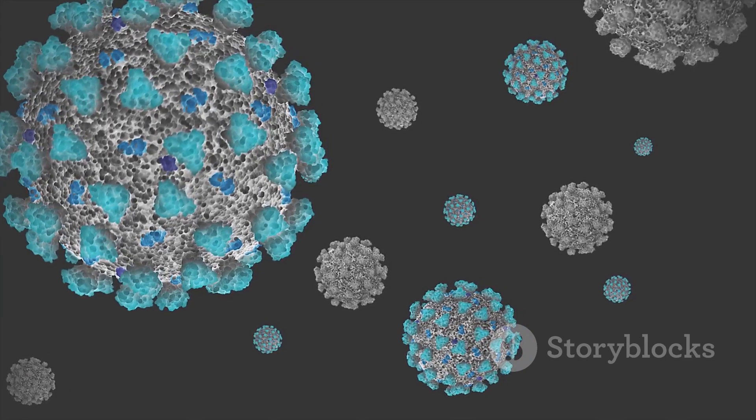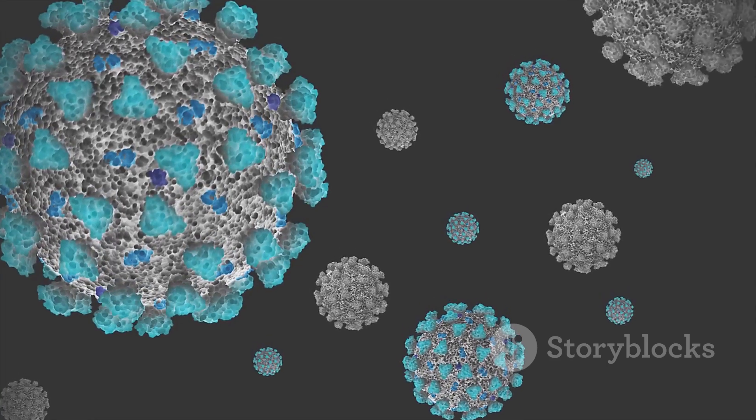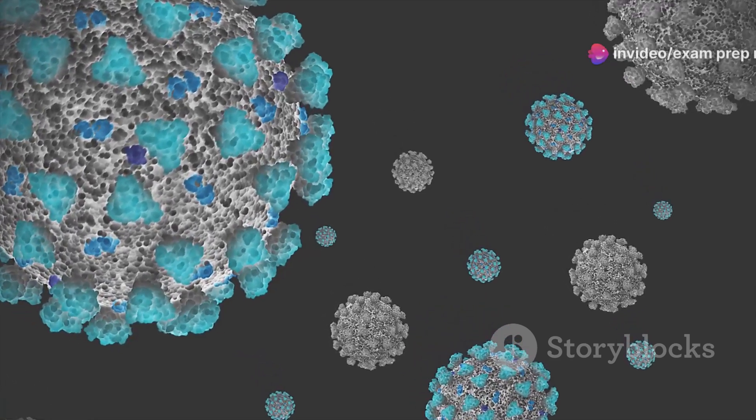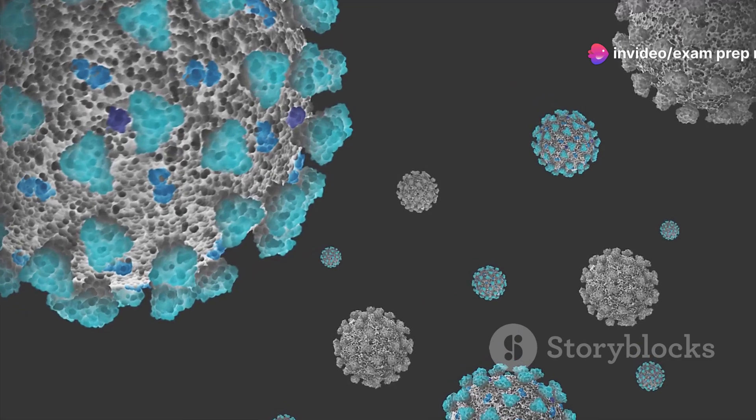Control measures for viroid infections often involve using viroid-free planting material and implementing strict sanitation practices to prevent the spread of these infectious agents.